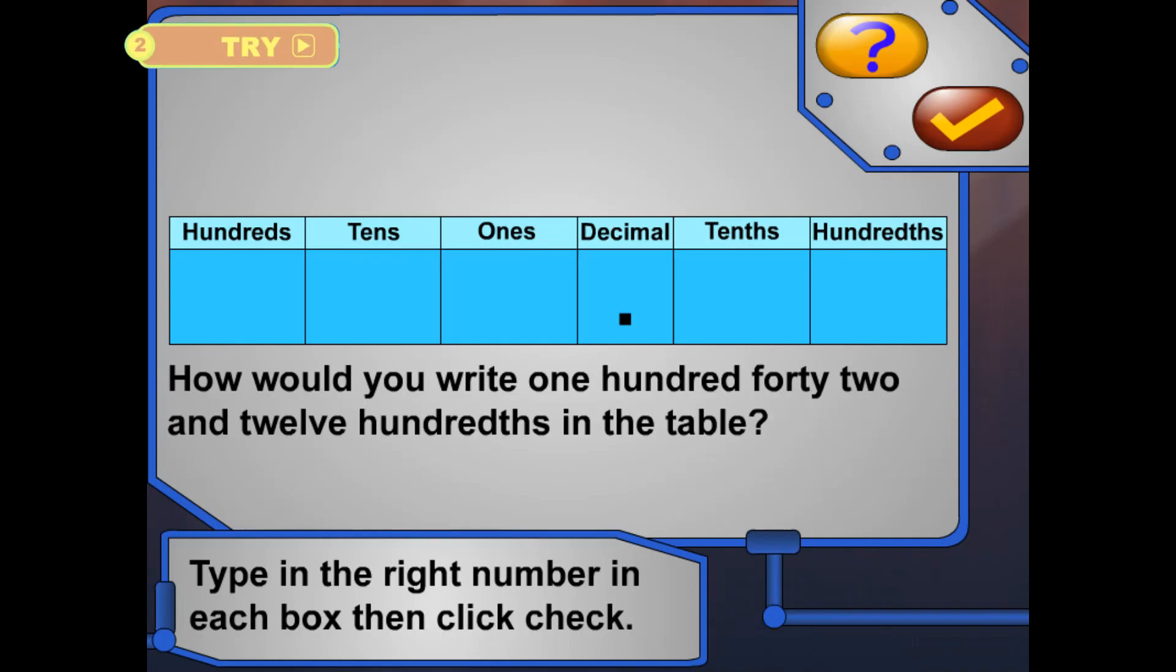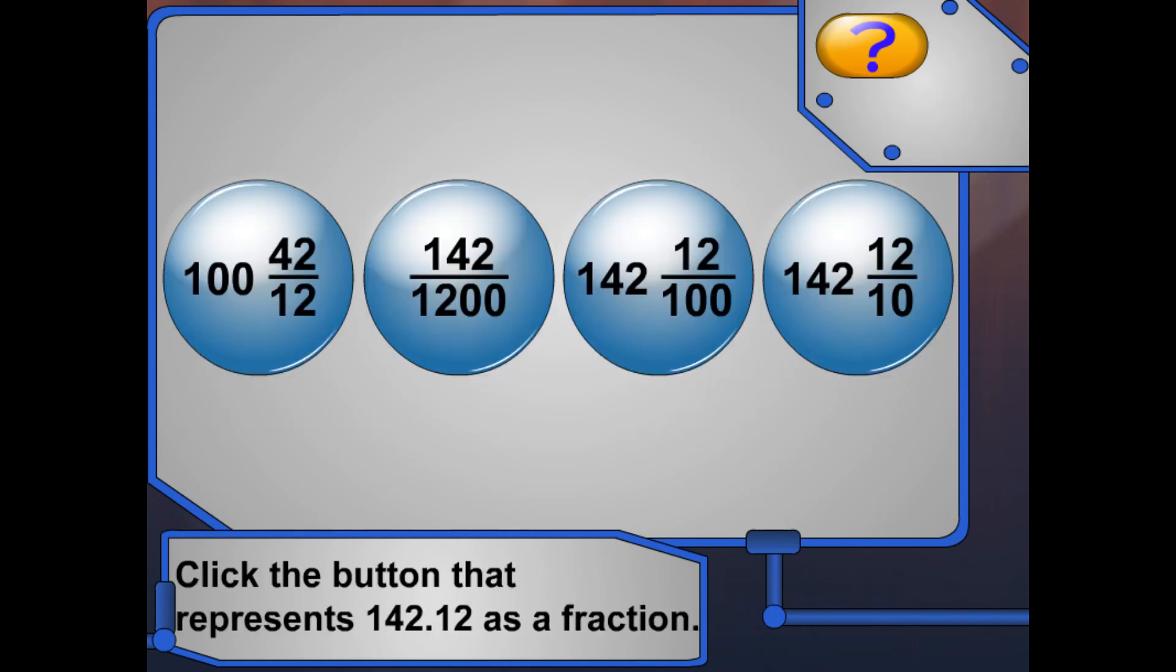Tell me, how would you write one hundred forty-two and twelve hundredths in the table? Type the right number in each box, then click check. All right! How would you write that? One hundred forty-two and twelve hundredths as a fraction. Way to go!